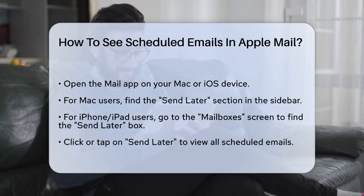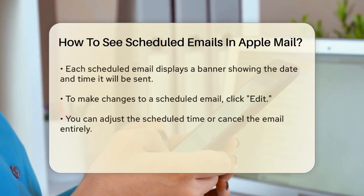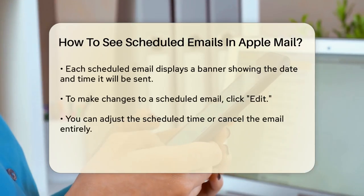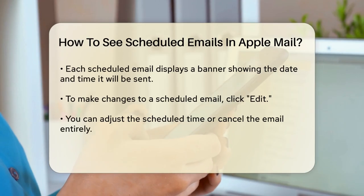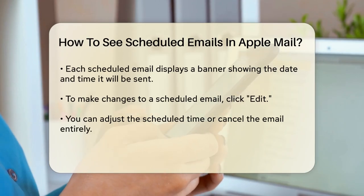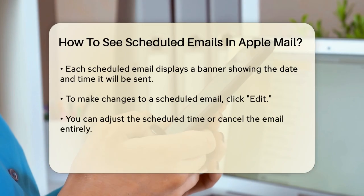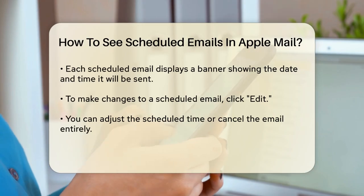When you click on a scheduled email, you'll see a banner at the top of the email that indicates the date and time it is set to be sent. If you need to make any changes, you can click Edit and adjust the scheduled time or cancel the scheduling altogether.